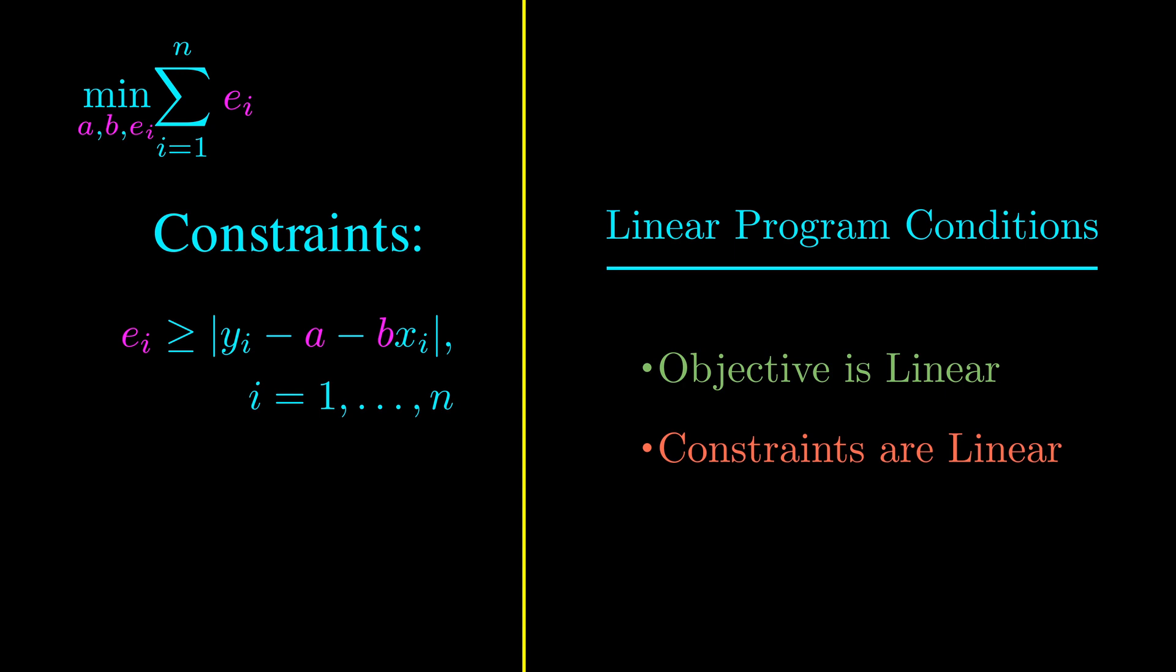From here, there is a trick we can use to get rid of these absolute values. Suppose we have the absolute value of x is less than or equal to 1. Then we can rewrite the constraint without absolute values, as seen here. Similarly, we can reformulate the constraints to get rid of the absolute values. This is a linear program because the objective and constraints are all linear. We can then use the simplex method or some other algorithm to solve this linear program.